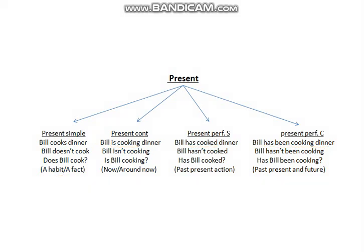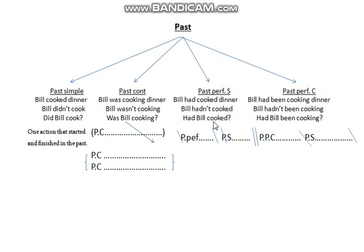Now let's move on to the past, which includes the same tenses but in the past. For the past simple: 'Bill cooked dinner' — regular verb. The negative uses didn't and questions use did, for all pronouns, unlike the present which has don't or doesn't. For the past continuous: 'Bill was cooking' — using to be in the past plus verb plus -ing. The negative uses wasn't, and you invert the pronoun and verb in questions. For the past perfect simple we have 'had cooked,' and the past perfect continuous 'had been cooking.'